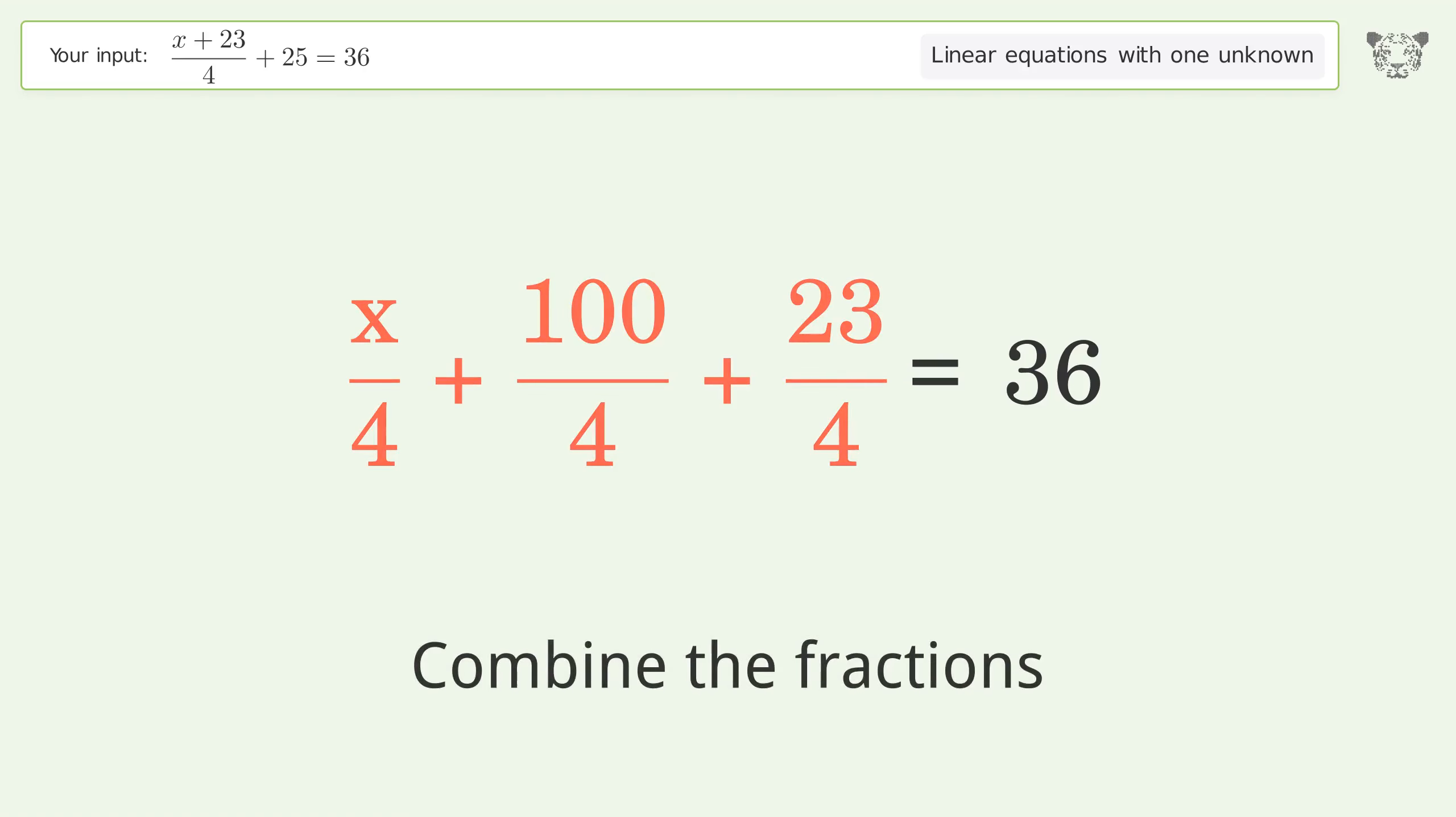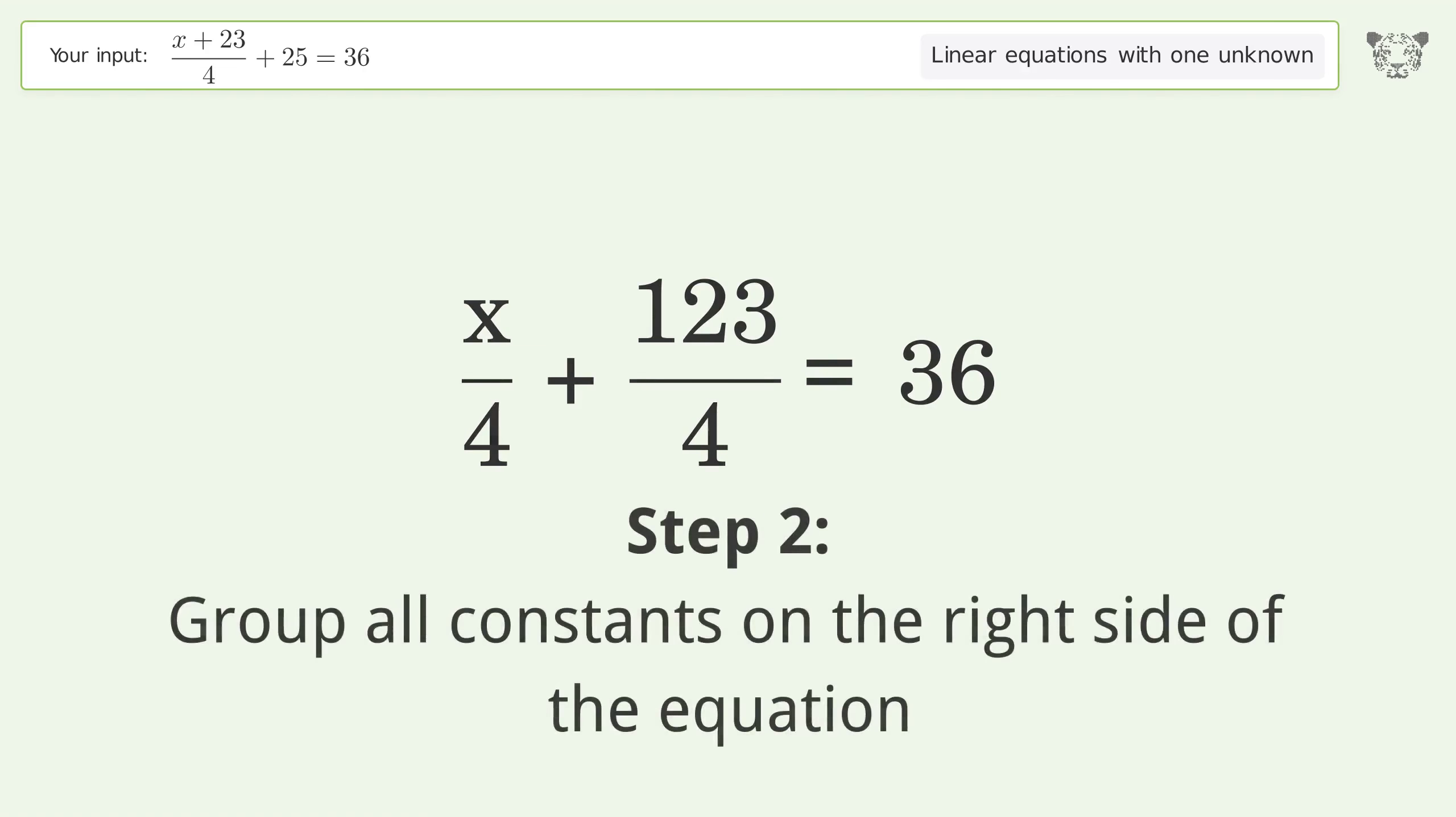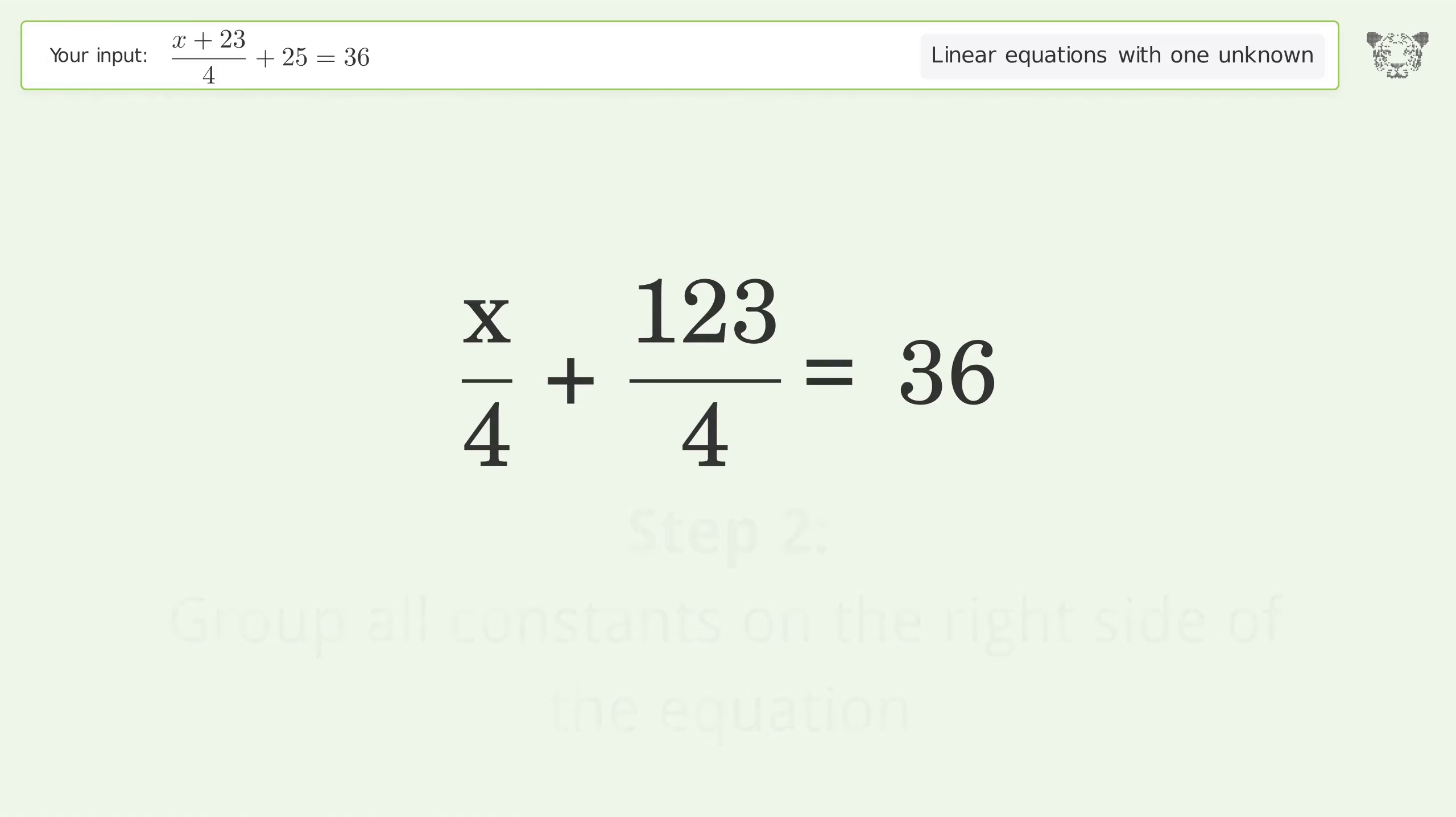Combine the fractions. Combine the numerators. Group all constants on the right side of the equation. Subtract 123 over 4.